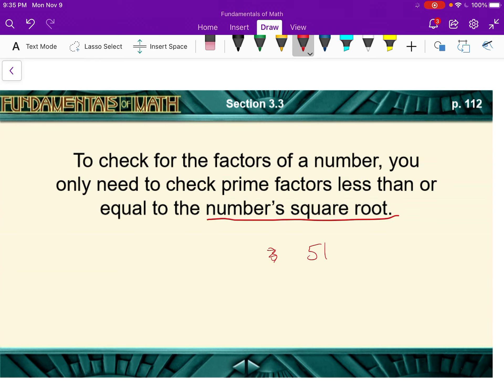51, well if there's any factors of 51, the square root of 51, we don't know that exactly, but we know the square root of 49 is 7. So we really, when we're checking 51, we only need to go up to 7 to check for factors of 51.